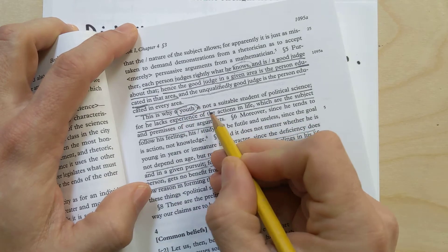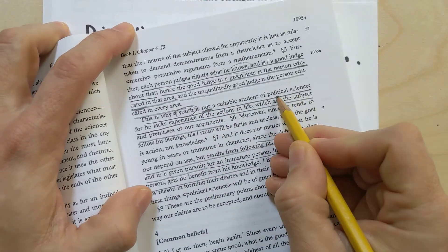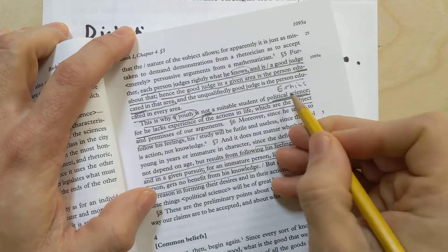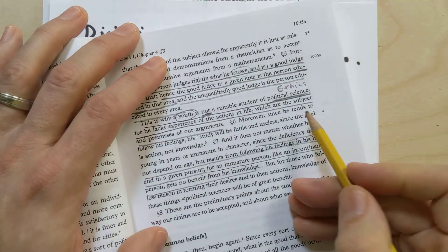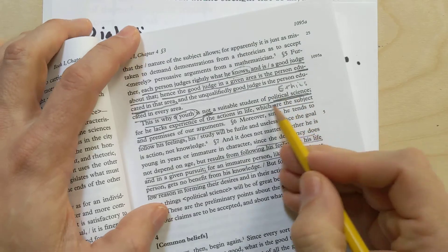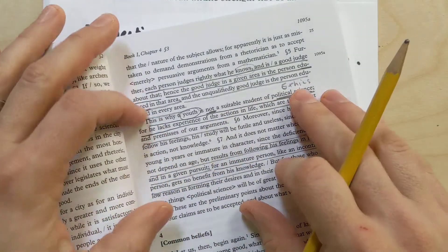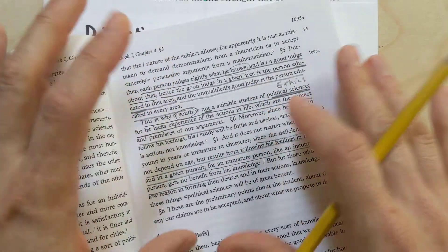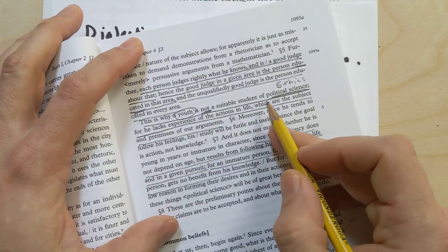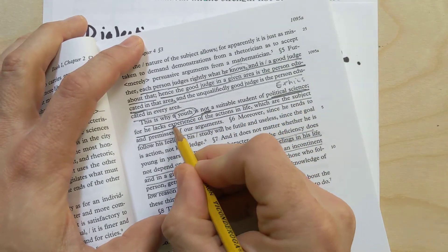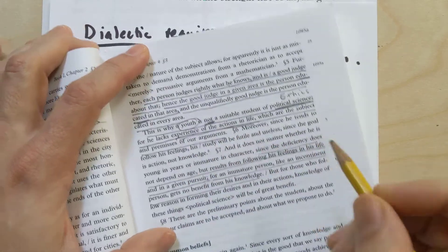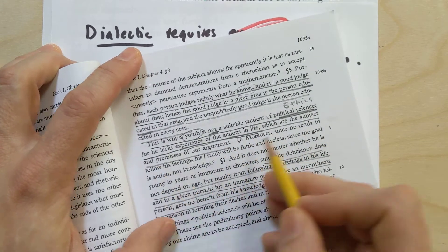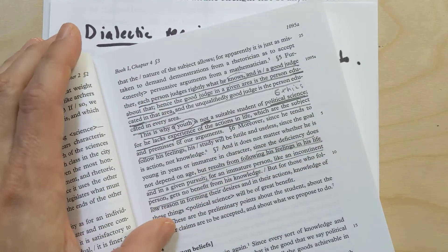This is why a youth is not suitable student of political science. One thing to point out, whenever Aristotle is talking about political science here, he's also talking more specifically about ethics. Because remember, ethics has to do with what I should do as a person, but politics has to do with what we should do as a community. Aristotle uses the phrase politics in book one almost synonymously with ethics. He says, a youth is not suitable student of political science for he lacks experience in the actions of life. The only way that you could do ethics well is if you've actually lived your life. The actions of life are the subject and premises of our arguments.